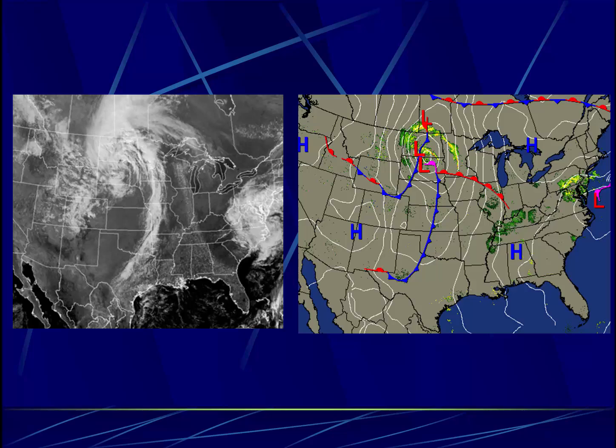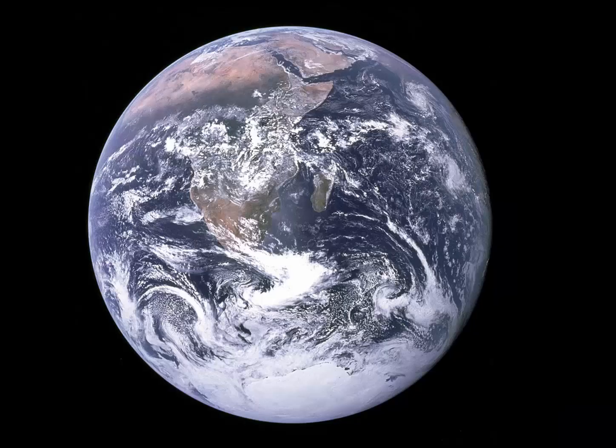We can see these on weather maps, but we can also see them in satellite imagery. Notice the weather system in the center of the United States has a distinct comma shape. The line of clouds is associated with the cold front. These are not strange weather systems. In this photograph taken by the Apollo 17 astronauts looking back at planet Earth, we can clearly see three or maybe four mid-latitude cyclones stretched around the southern hemisphere.